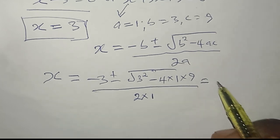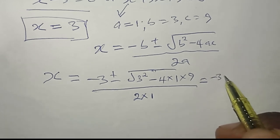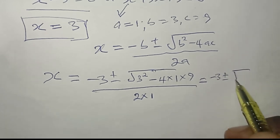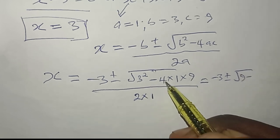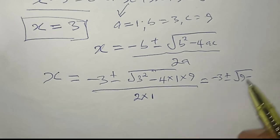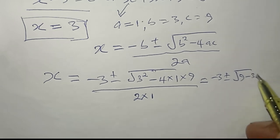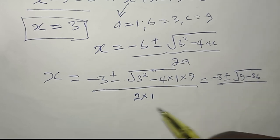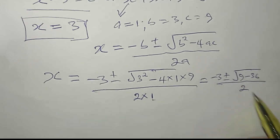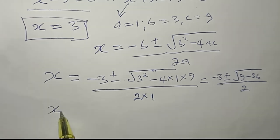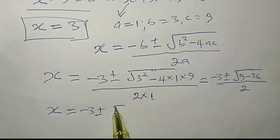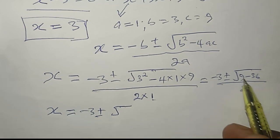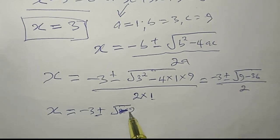Continuing the simplification: 9 minus 36 gives us negative 27, so we have x = (−3 ± √(−27)) / 2.